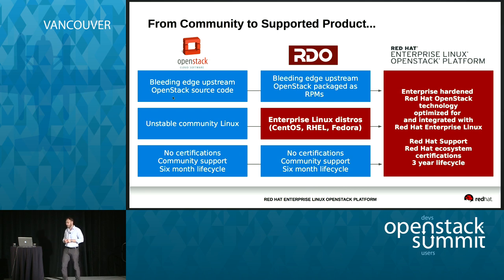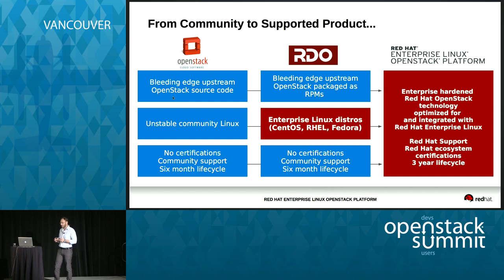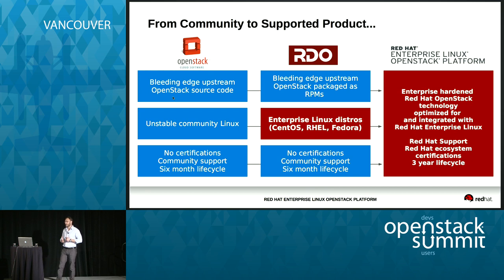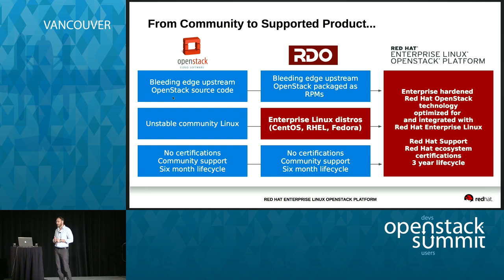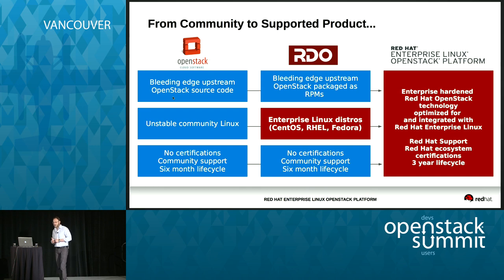RDO follows really closely to the upstream lifecycle. If there's a release every six months, we'll have an RDO-based version about a week or a couple of weeks later. Following that, there's a period of about two to three months where we stabilize the release and do bug fixes that we contribute back to the community. Then two to three months later, we release an enterprise-grade stable release — Red Hat Enterprise Linux OpenStack Platform — with a three-year lifecycle, giving you support, bug fixes, and security fixes throughout.